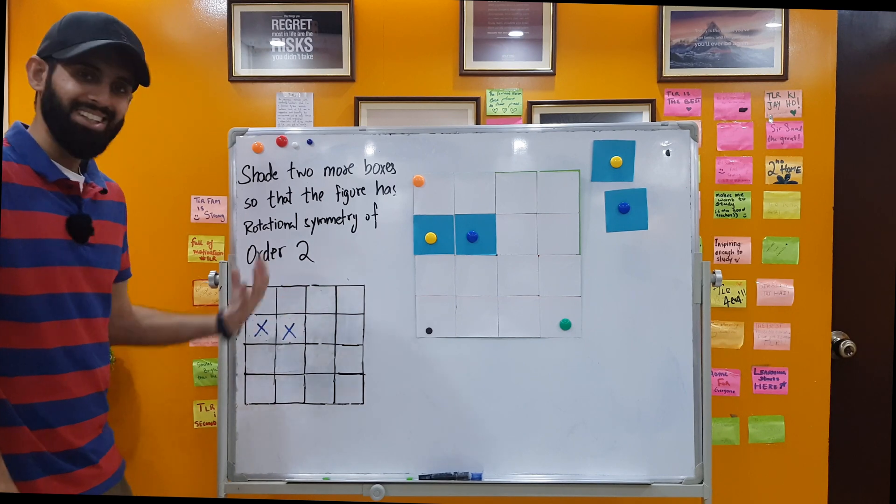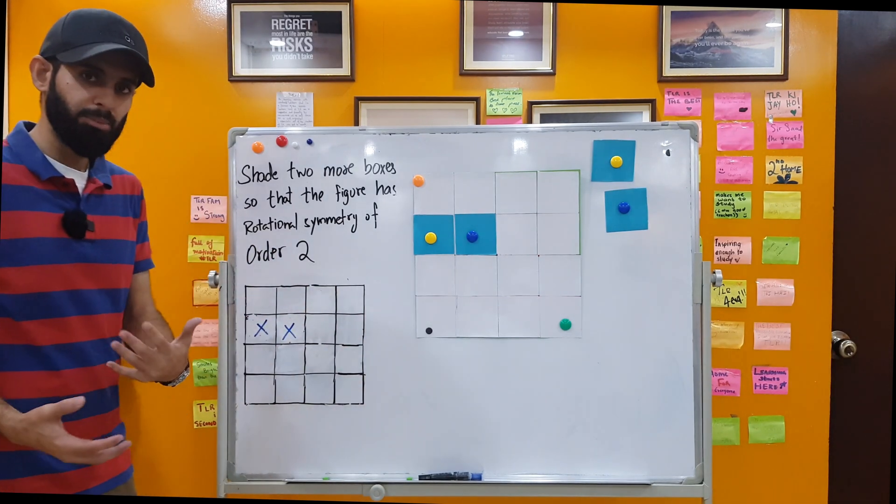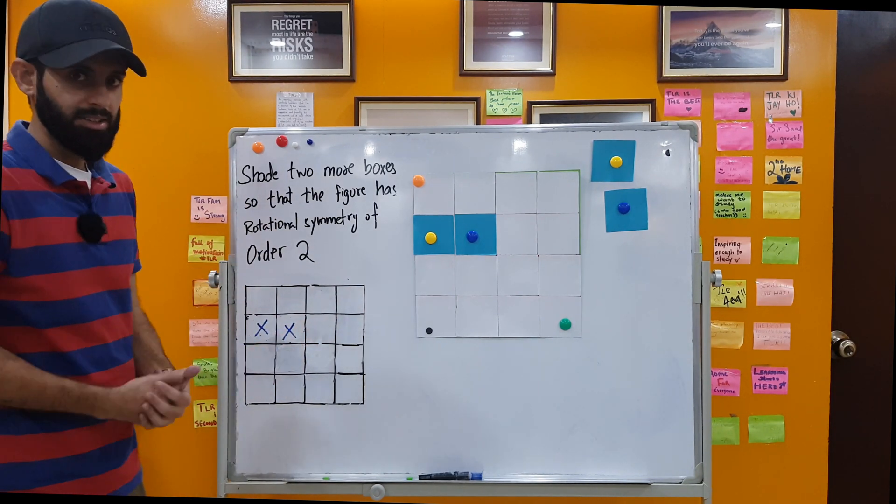This order 2 means that you and I should be able to obtain the exact same shape once we've rotated it 180 degrees. Now this concept of 180 degrees is something that we covered in the previous video, which if you haven't seen it I'd suggest you go and watch it right now.